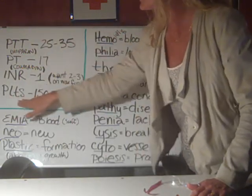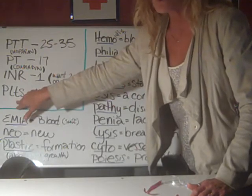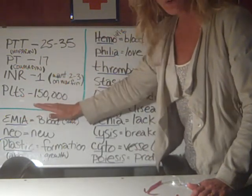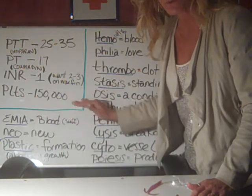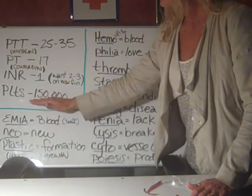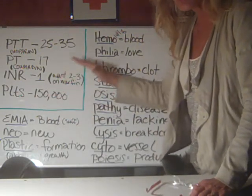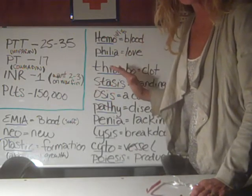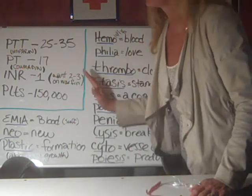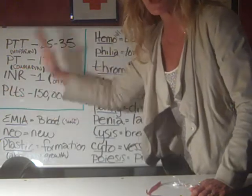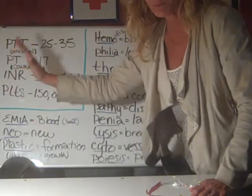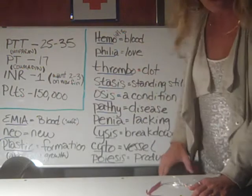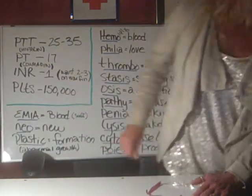Platelets are a very important number to know. That should be 150 to 300. Patients with too high platelets have a higher risk for clotting. Patients with really low platelets have high risk for bleeding. So those numbers are very important.